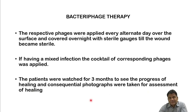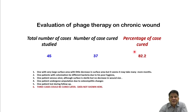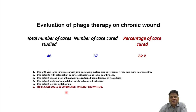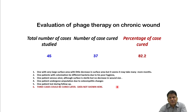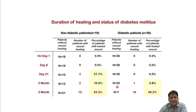In our study, we took a total of 45 cases, of which 37 were cured — a cure rate of 82.2 percent. Among the six failures: one had a vascular issue, one underwent amputation without informing us, one was lost to follow-up, and one was a chronic alcoholic who did not maintain proper hygiene, resulting in repeated re-infection from different bacteria.